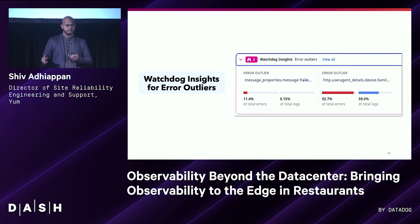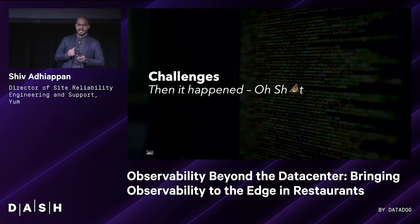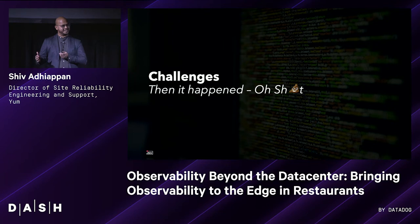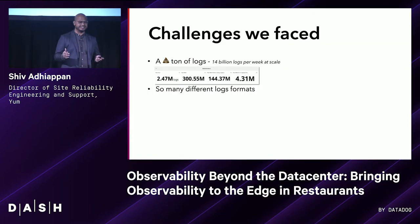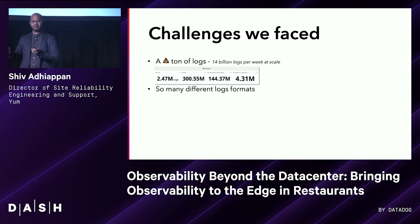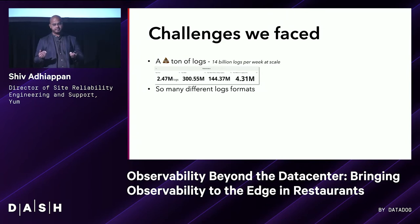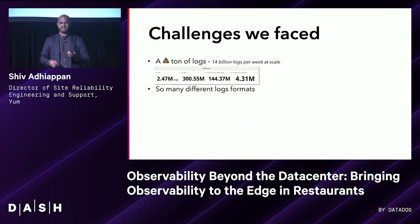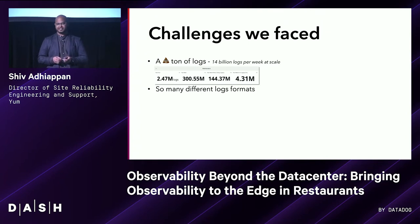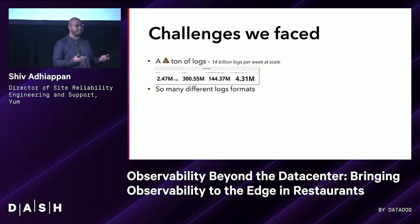But then things happened. Once we were making some progress, there was a lot of logs — to the point where we also started scaling and deploying point-of-sale devices to those restaurants. We were getting so many log lines coming in that we projected it to be about 14 million log lines in a given week. And it's a big problem to solve — so many different log formats.